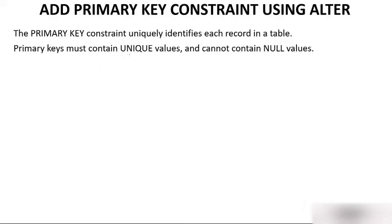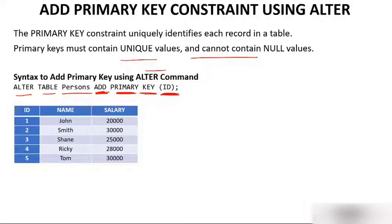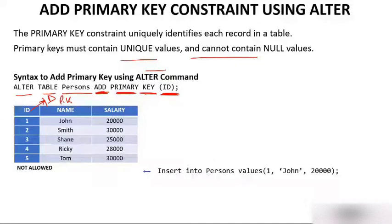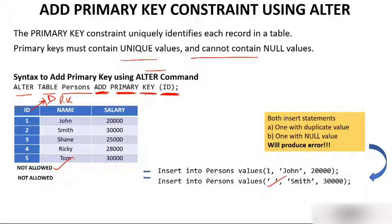If you don't want duplicates or nulls, you can add a primary key to this table. The primary key constraint uniquely identifies each record; it must be unique and cannot be null. The syntax to add a primary key using ALTER is: ALTER TABLE table_name ADD PRIMARY KEY (column_name). For example, ALTER TABLE persons ADD PRIMARY KEY (id). The moment you do this, the 'id' column becomes the primary key, and duplicate or null values will not be allowed.